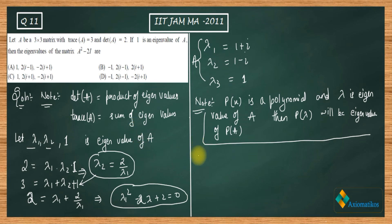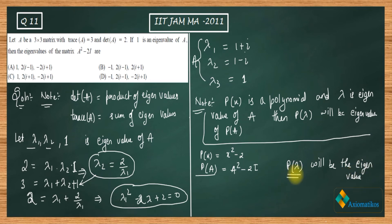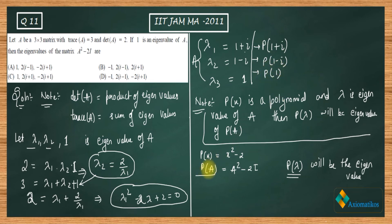According to this note, if we consider our polynomial to be p(x) equals x squared minus 2, then p(A) will be A squared minus 2 times the identity matrix. Therefore, p(lambda) will be the eigenvalue of p(A). So we need to calculate p(1+i), p(1-i), and p(1) — these three values will be the eigenvalues of A squared minus 2I.